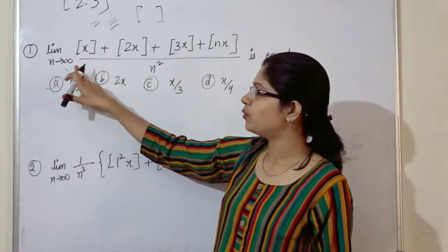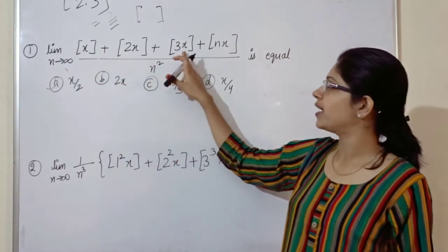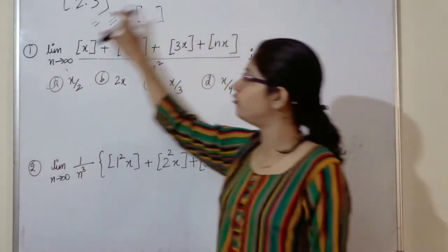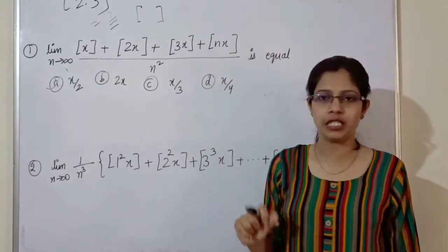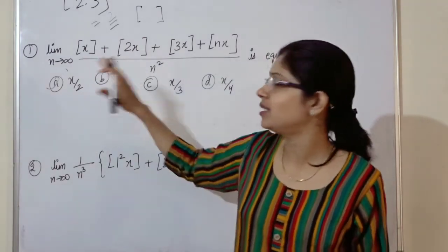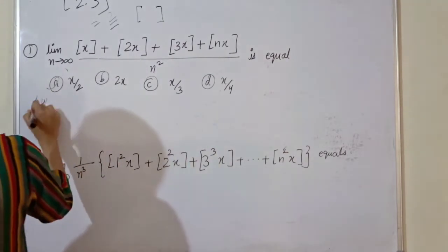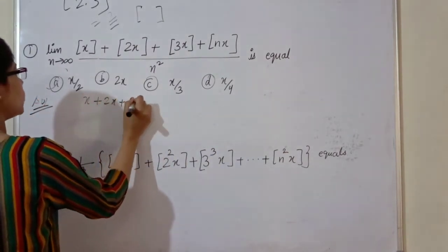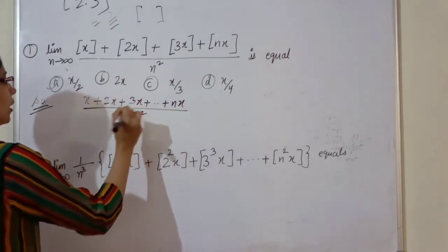So the limit as n approaches to infinity involves the greatest integer of x plus 2x plus 3x, and so on. The short trick: simply write x plus 2x plus 3x plus up to nx, all divided by n square.